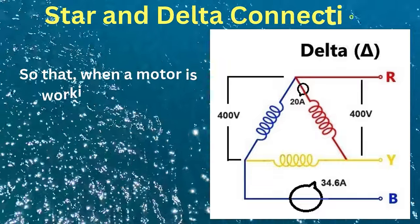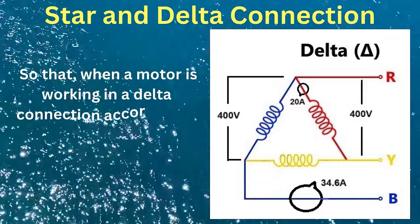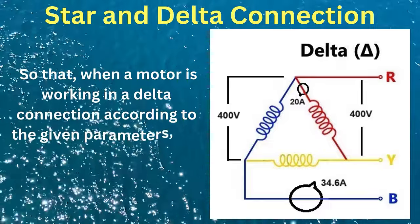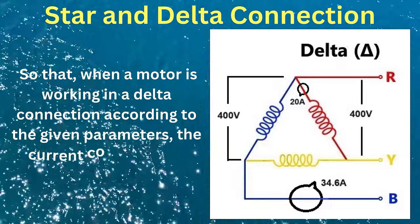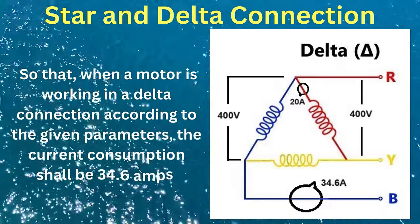So when a motor is working in a delta connection according to the given parameters, the current consumption shall be 34.6 amps.